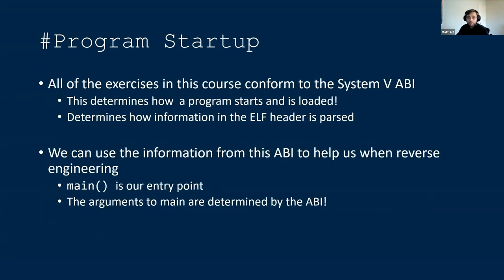Since all of our exercises are for x86-64 Linux, they're going to conform to the System V ABI. We talked about the application binary interface in the last session. We can take that information and use it to clean up the decompiler output. The arguments to the main function are determined by this ABI, so we can utilize that information as well.